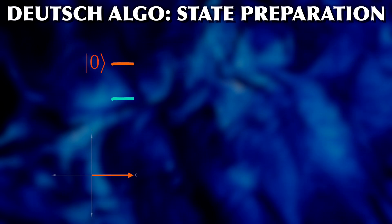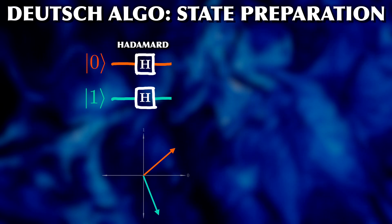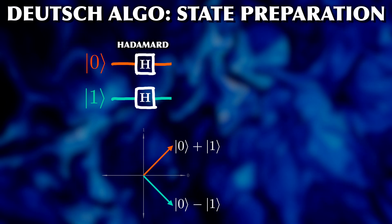We start with initializing our qubits to 0 and 1 and running both through a so-called Hadamard gate, which changes the state vectors to an equal superposition of 0 and 1, like this. We do this so that we can run the function on both 0 and 1 in one go.